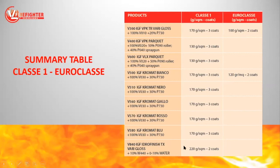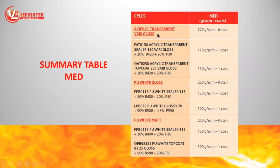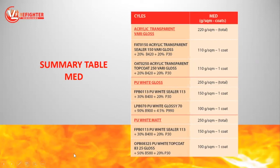One interesting aspect is that in order to have the Class 1 certification with the new water-based product, Hydrofinish, it is necessary to apply less quantity than the solvent-based one. Regarding the MED, also here we have the acrylic transparent cycle — it is necessary to apply a total quantity of 220 grams per square meter: 100 grams of sealer and 100 grams per square meter of top coat. Regarding the white gloss and white matte, the necessary quantity is 250 grams per square meter: 150 grams of sealer and 100 grams of top coat.